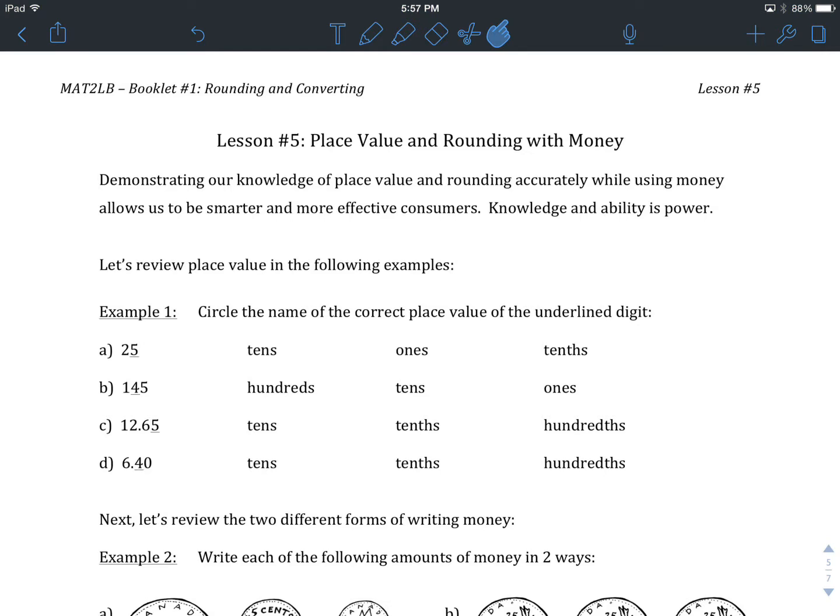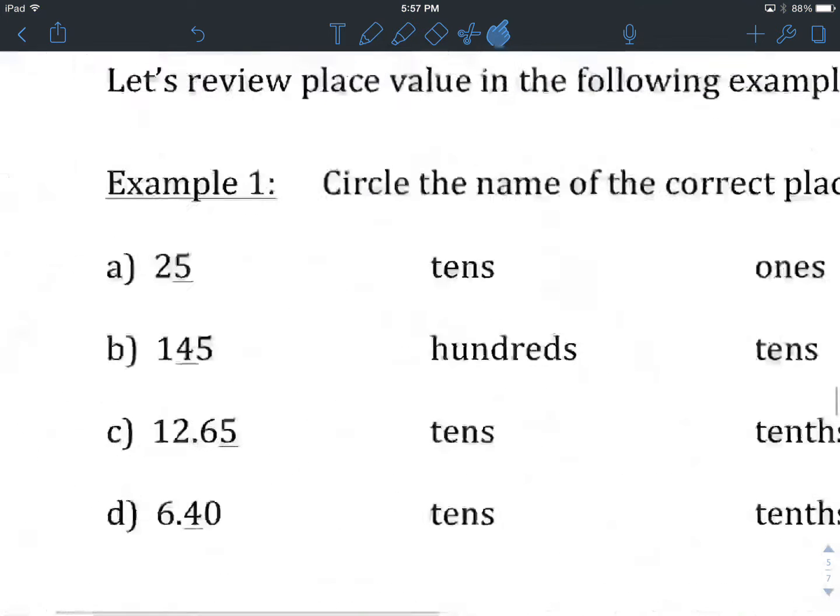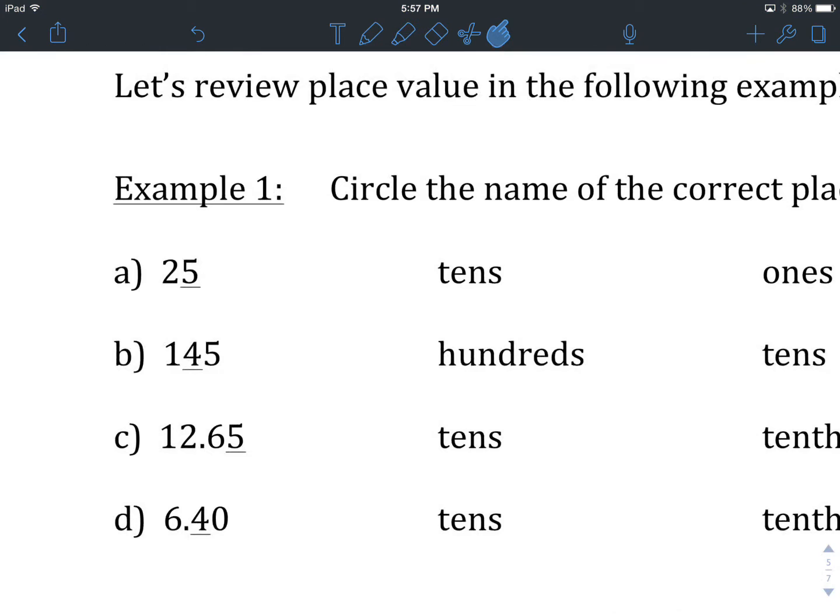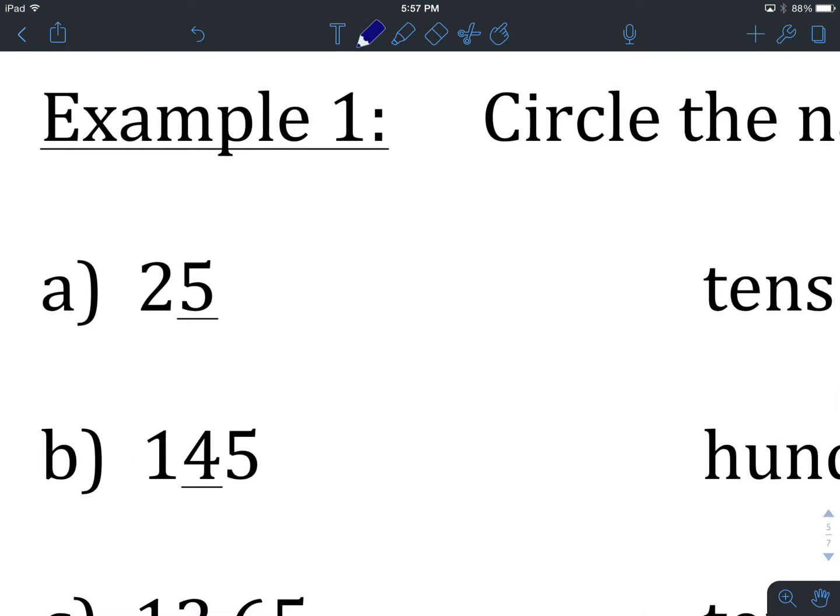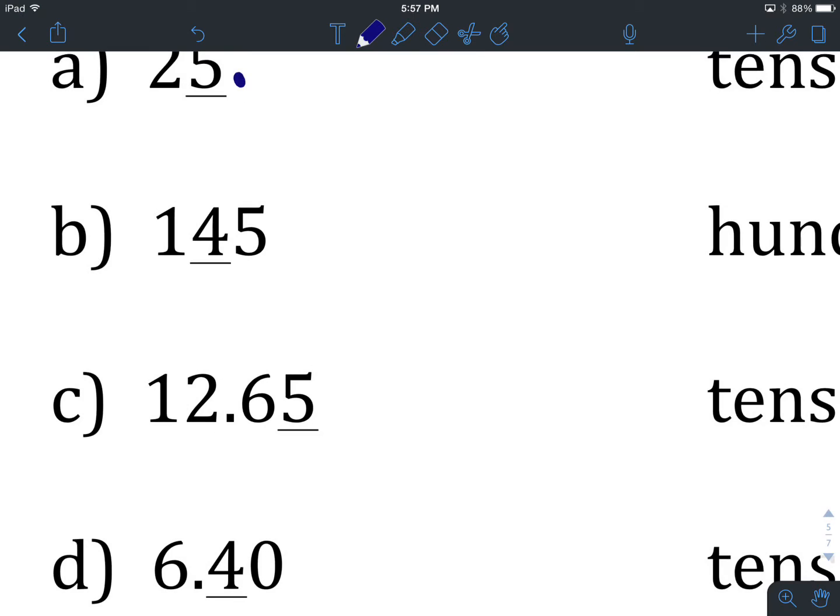Hopefully you've gone back and had a look, or we're feeling confident enough to try this quiz without review. Let's have a look at Example Number 1: Circle the name of the correct place value of the underlined digit. Here we have 25 and the 5 is what we've got underlined. Although we don't see it, there is actually a decimal place right here. This is an assumption that we can make any time we read a number without a decimal place. We can safely assume that there is a decimal place to the right of the last digit.